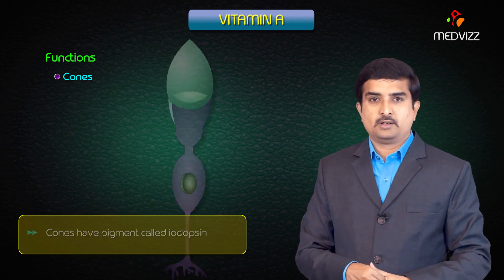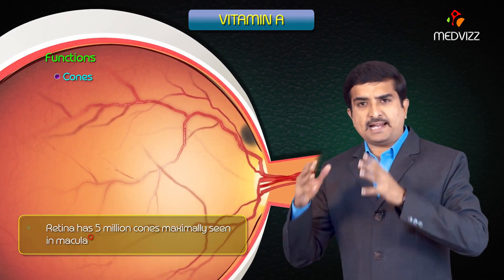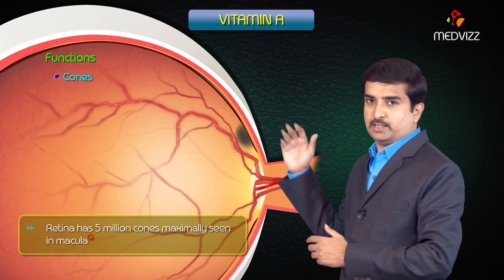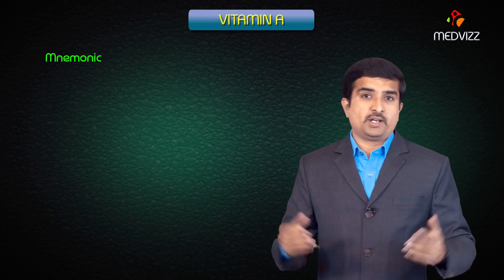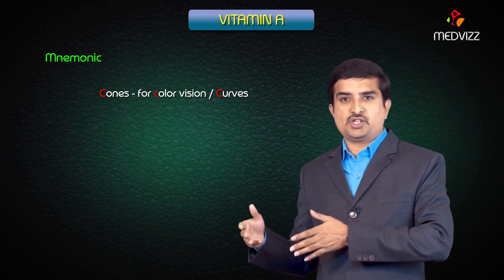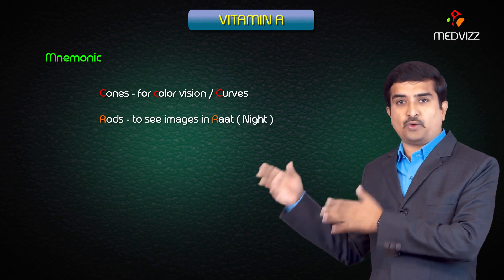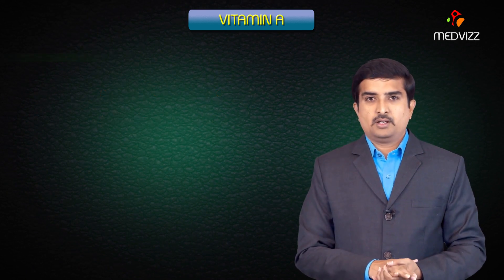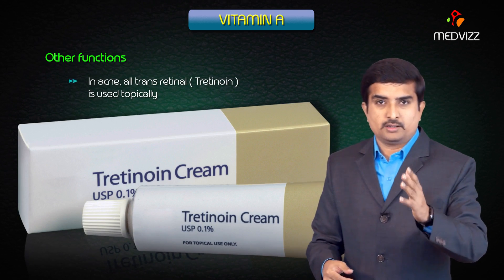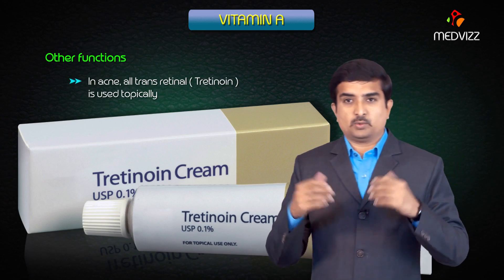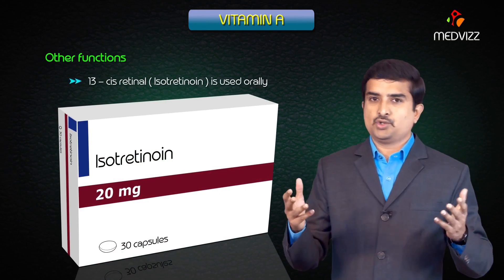The retina has approximately 5 million cones, maximally seen in the macula. A useful mnemonic: cones for color vision and rods to see images in the dark (night). Topically, all-trans retinoic acid is used in acne treatment, while 13-cis retinoic acid (isotretinoin) is used orally.